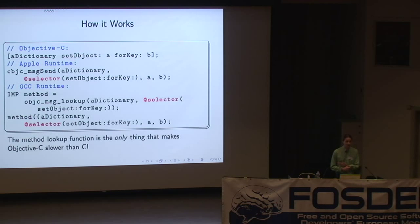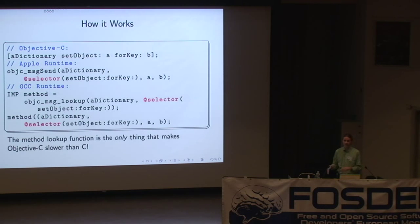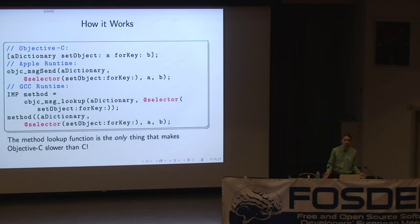The Apple runtime has variants like objc_msgSend_stret for functions returning structures, and objc_msgSend_fpret for functions returning floating-point values — it gets really horrible and messy, but is slightly faster. The GNU runtime version does it as a two-step process: first call objc_msg_lookup which returns a function pointer, then the compiler inserts a call to that function just as it would any C function. This extra layer of indirection in message lookup is really the only thing that makes Objective-C slower than C.